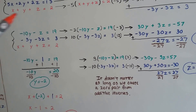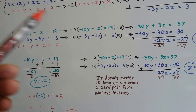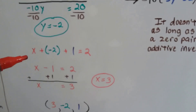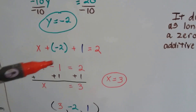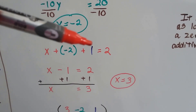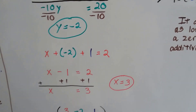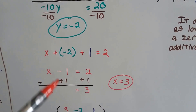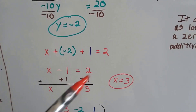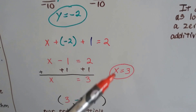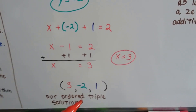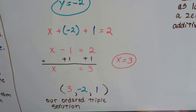Now we know z is 1 and y is negative 2. We plug both into the last red equation that has no coefficients: x plus negative 2 plus 1 equals 2. Combining like terms, negative 2 plus 1 makes negative 1. Adding 1 to each side, we get x equals 3. And there's our ordered triple: x is 3, y is negative 2, and z is 1.